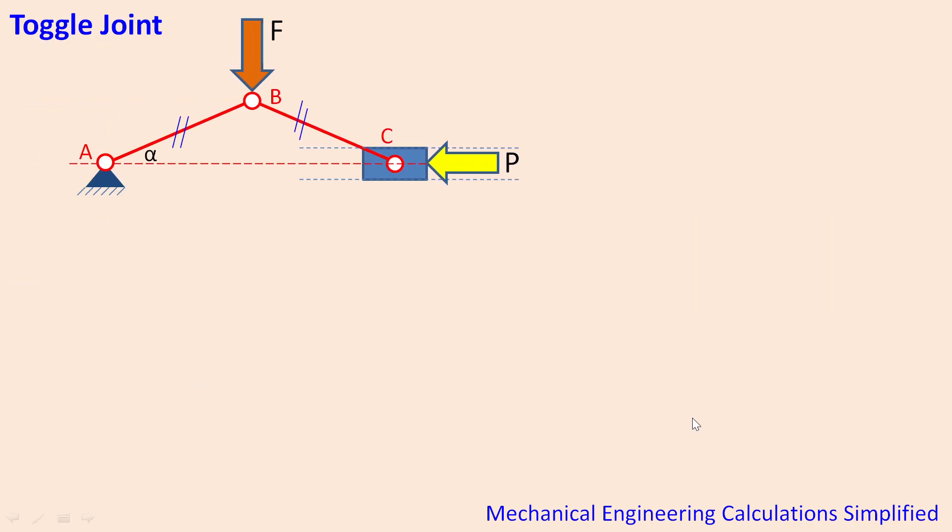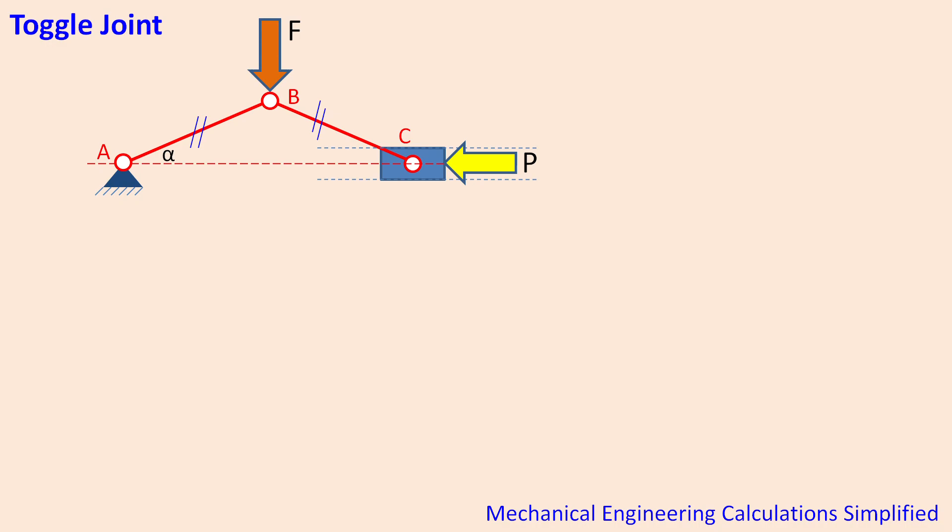So what is actually a toggle joint from mechanical engineering analysis point of view? It is actually made of four links, it is actually an inversion of a four bar mechanism. The first link is the fixed joint, the second link is AB, the third link is BC and the fourth link is the slider.